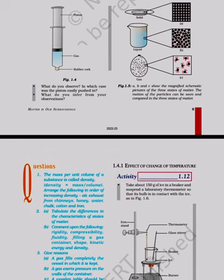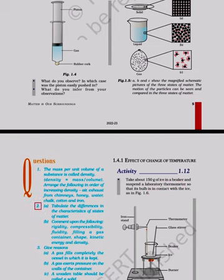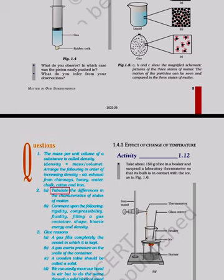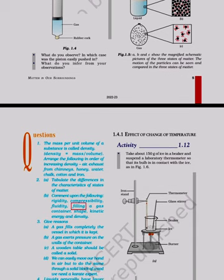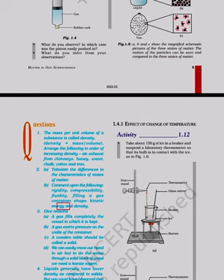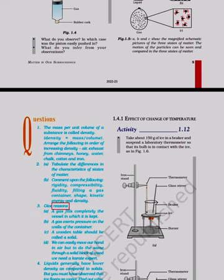1.4.1 Effect of change of temperature. Activity 1.12: Take about 150 g of ice in a beaker and suspend a laboratory thermometer so that its bulb is in contact with the ice. Tabulate the differences in the characteristics of states of matter. Comment upon the following: rigidity, compressibility, fluidity, filling a gas container, shape, kinetic energy and density.